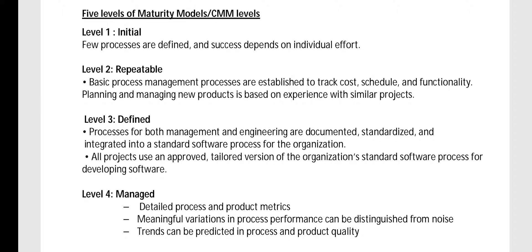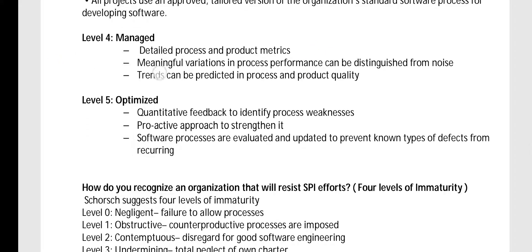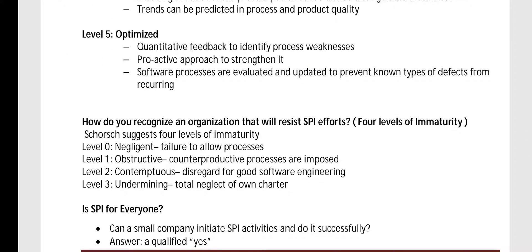Level 4 is Managed — there are detailed process and product metrics, meaningful variance in performance is measured, and trends can be predicted. It is a very good, manageable level. Level 5 is Optimizing — quantitative feedback is used to identify process weaknesses, and a proactive approach strengthens the whole system with a proper feedback mechanism running in the organization.